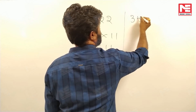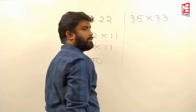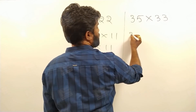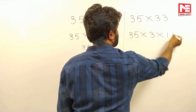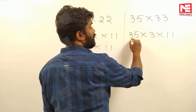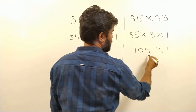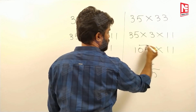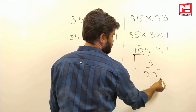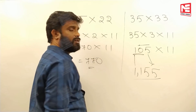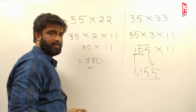For 35 into 33: since 33 is 3 into 11, compute 35 into 3, which gives 105, then 105 into 11. Using the trick: 5 as it is, 5 plus 0 is 5, 1 plus 0 is 1, and 1 as it is — your answer is 1155.